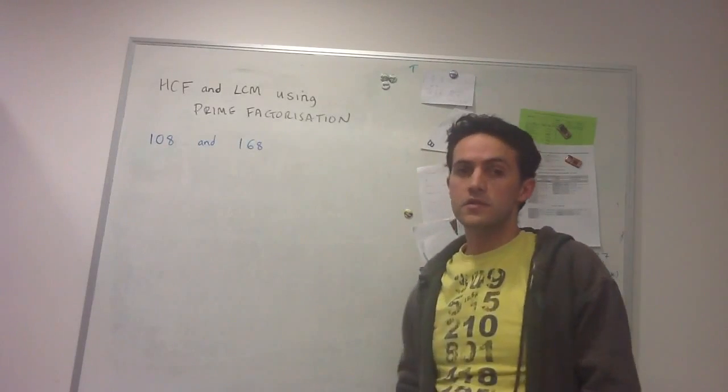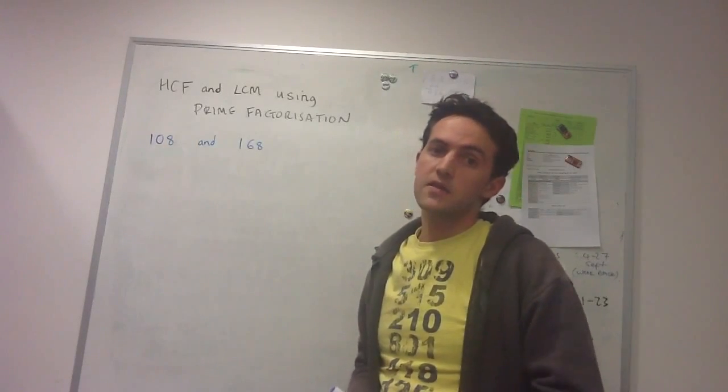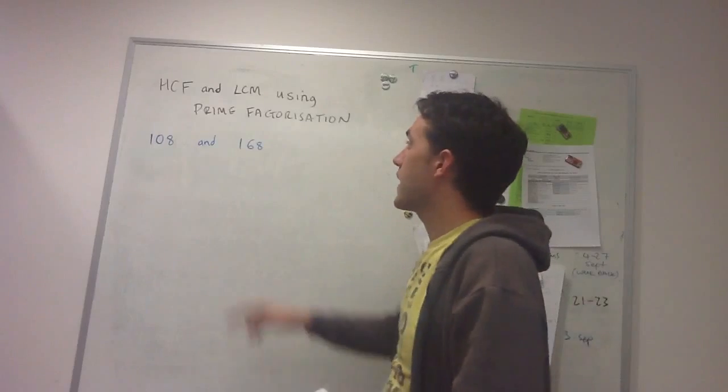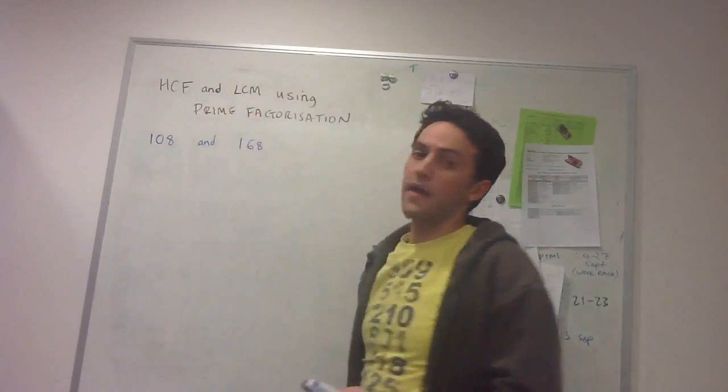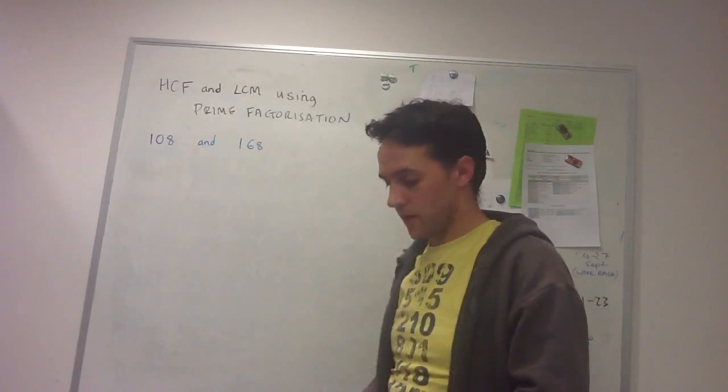Here we want to see how to use the prime factorization of numbers in order to quickly find the highest common factor and the lowest common multiple of any given two numbers.